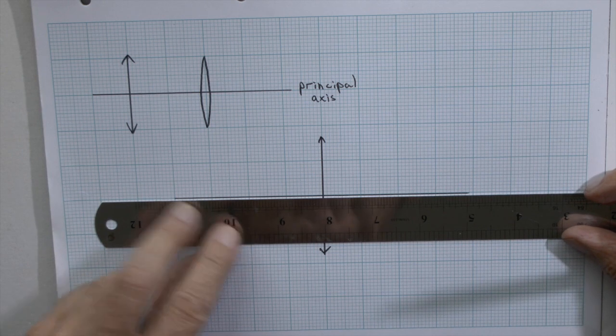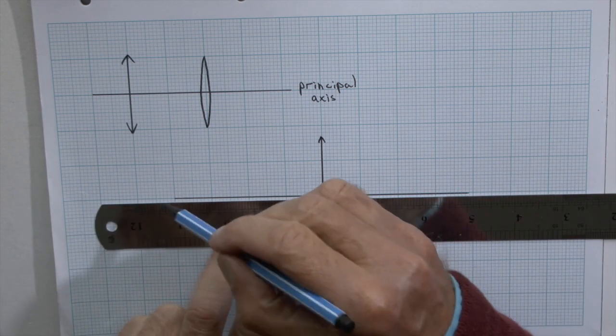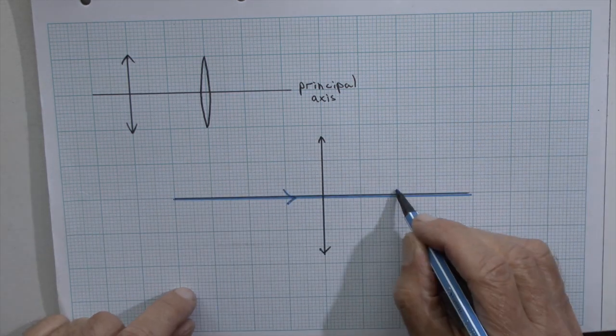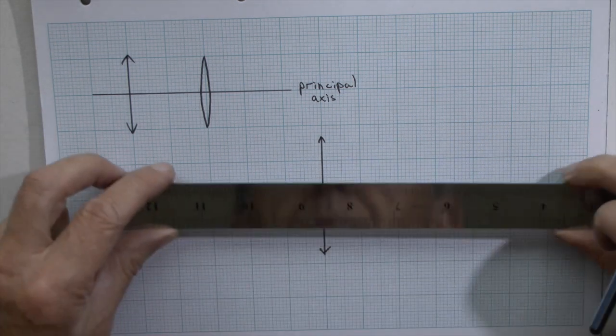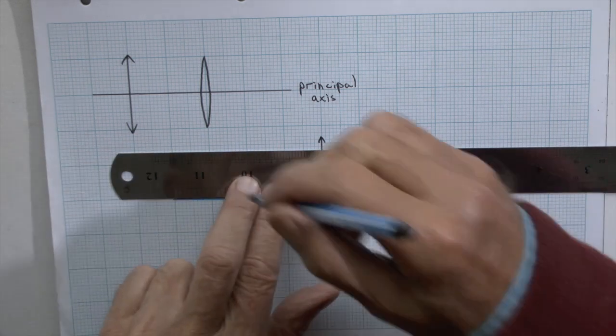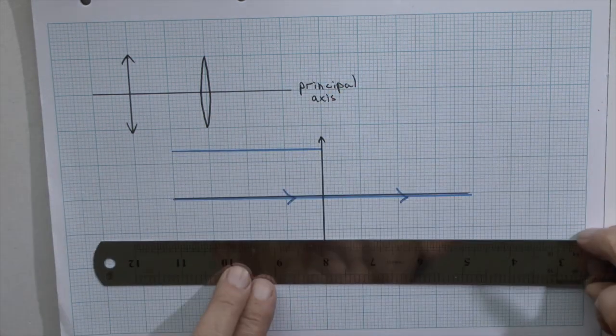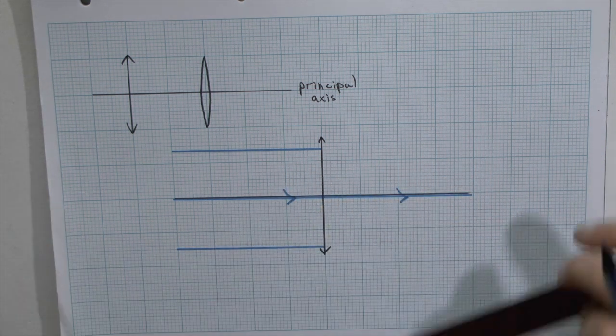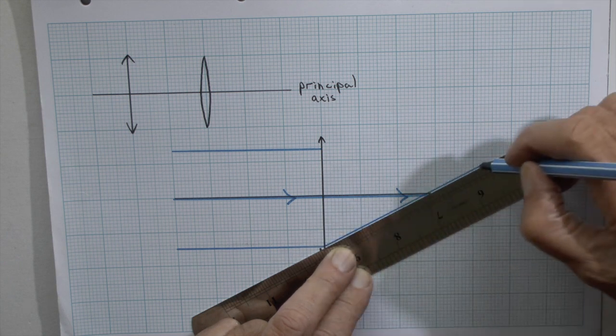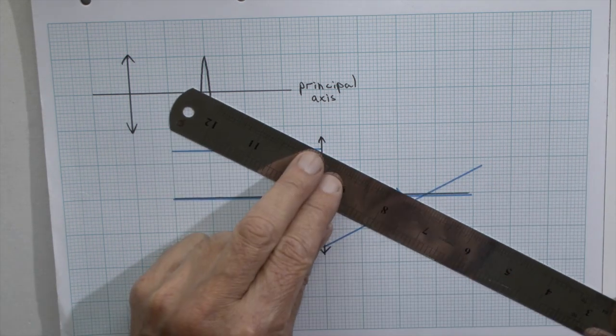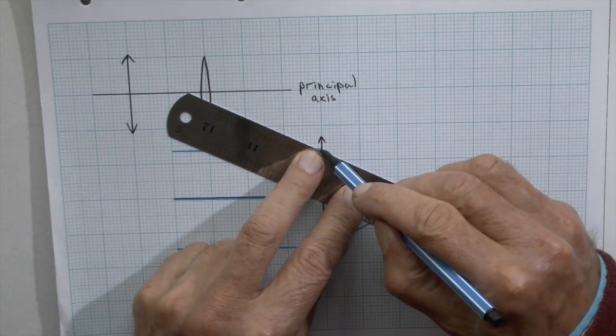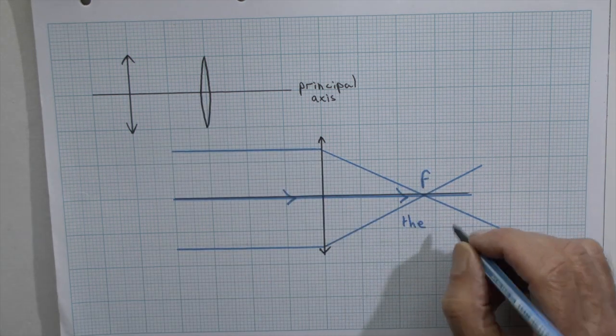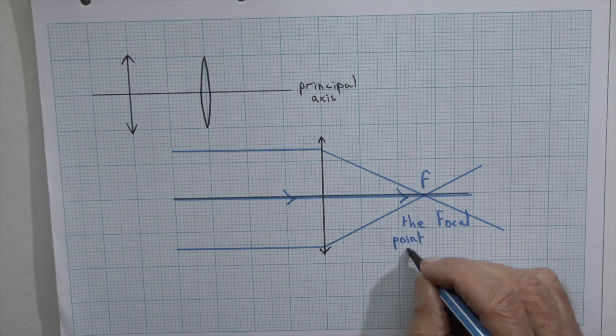Rays of light meeting a convex lens will pass through one point. The ray of light passing through along the principal axis straight through the middle of the lens will simply pass straight through. A ray of light at each edge will be converged, will be brought together to a focal point. That point is called the focal point or the principal focus.